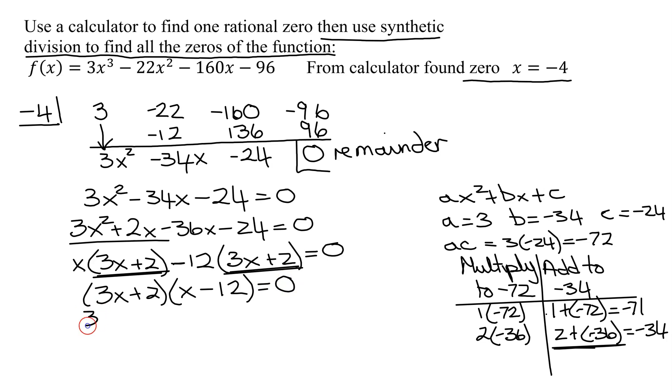So now, just set each factor equal to 0. 3x plus 2 equals 0. So 3x equals negative 2, by subtracting 2 from both sides, divide both sides by 3. So I get x equals negative 2 thirds. And from this one, x minus 12 equals 0. So x equals positive 12. So now we need to list all the zeros of the function. I have negative 2 thirds, positive 12, and negative 4.